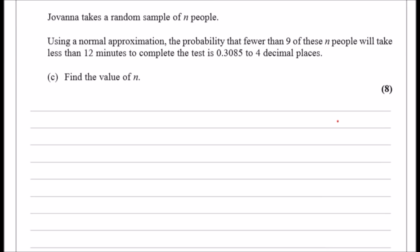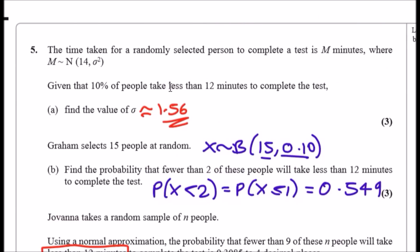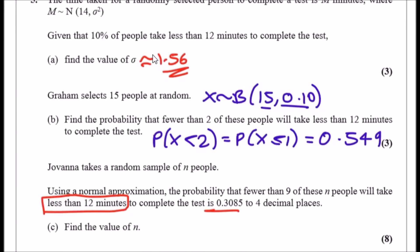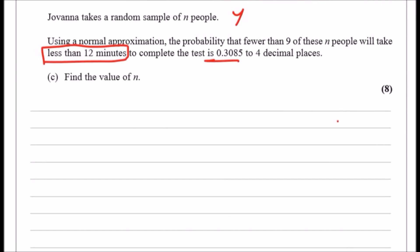Part C: Giovanna takes a random sample of n people. Using a normal approximation, the probability that fewer than 9 of these n people will take less than 12 minutes equals 0.3085 — find n. The 'less than 12 minutes' condition still refers to the 10% proportion. So we define Y ~ B(n, 0.10).